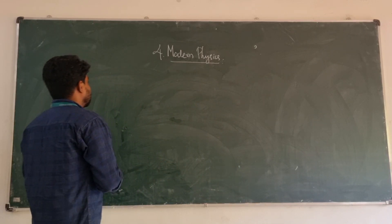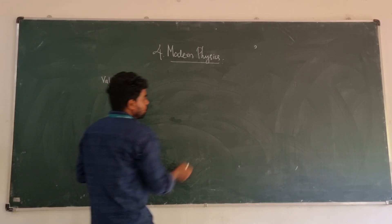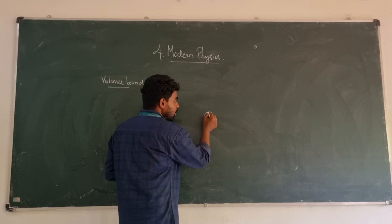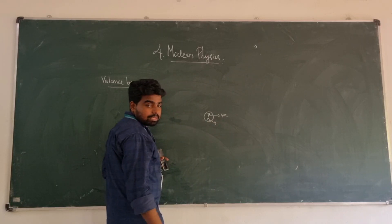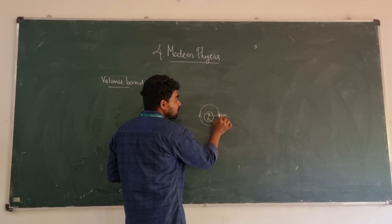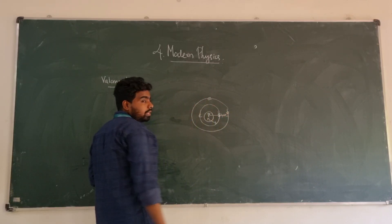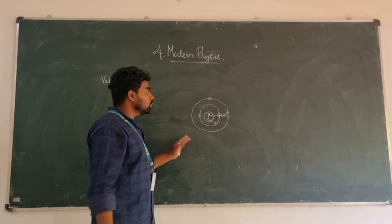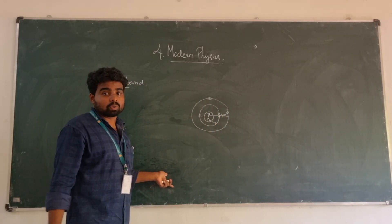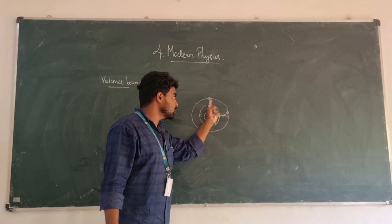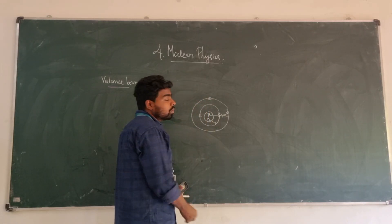Valence electrons are the electrons in the outermost shell of an atom. All electrons in the outermost shell are called valence electrons. These are the various electrons in the outer-most shell. They carry different energy values — they are the valence electrons with specific energy levels.